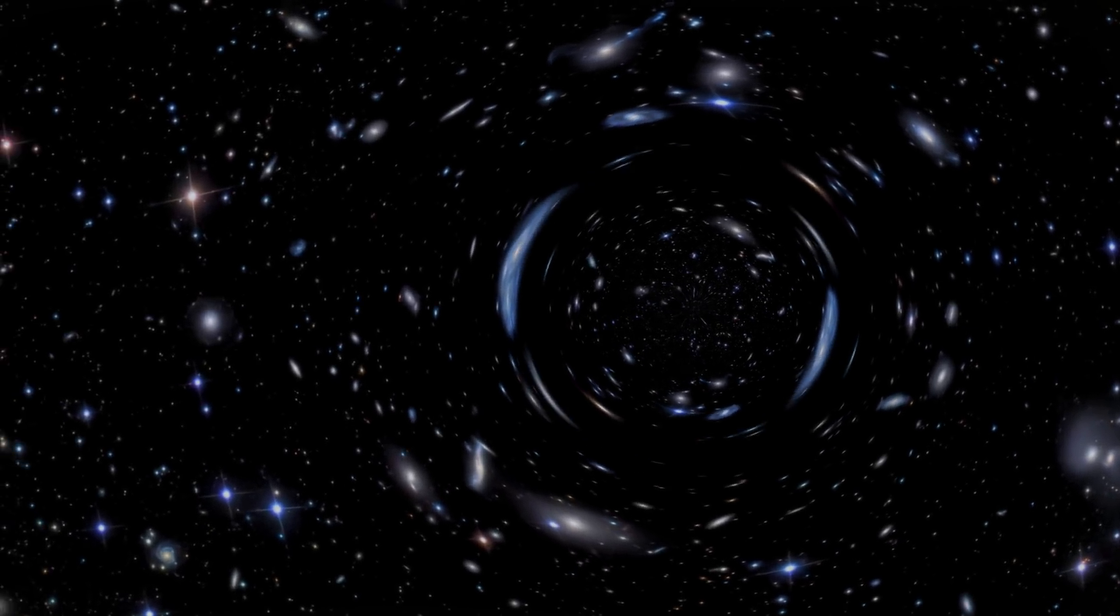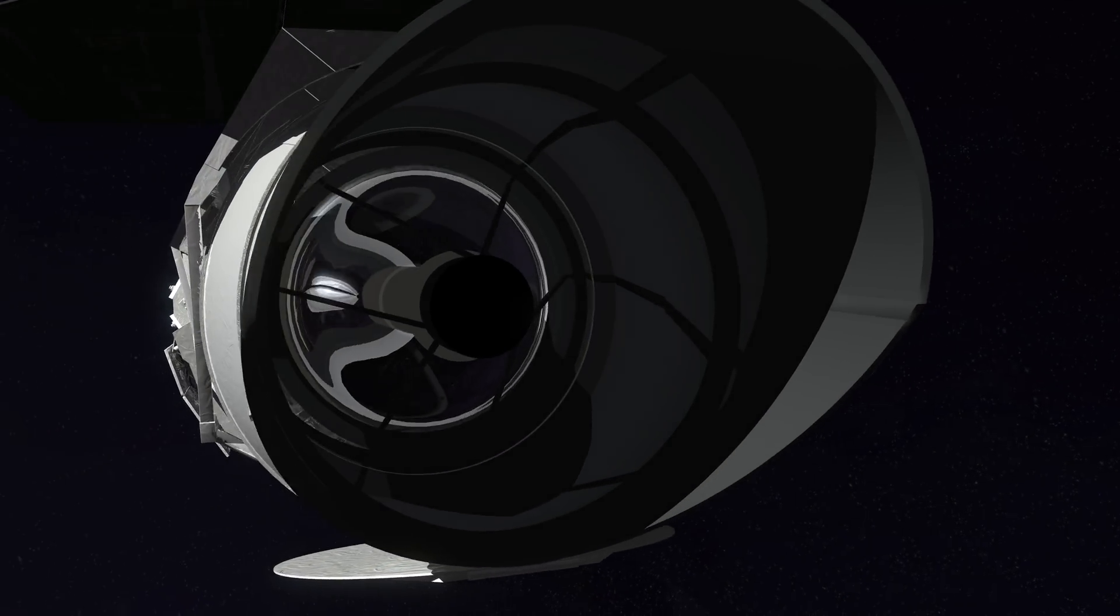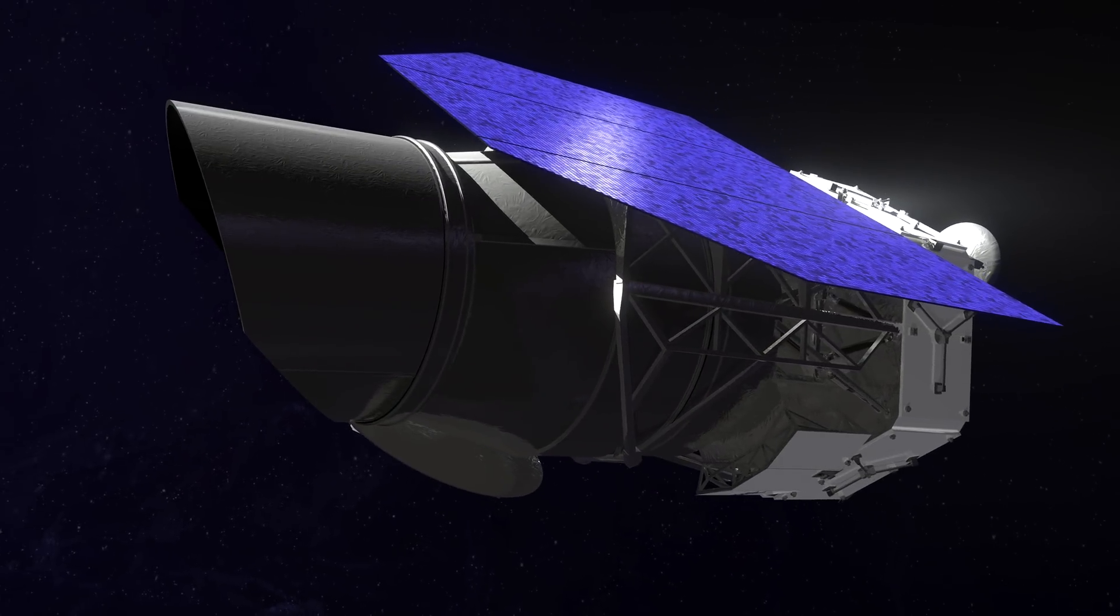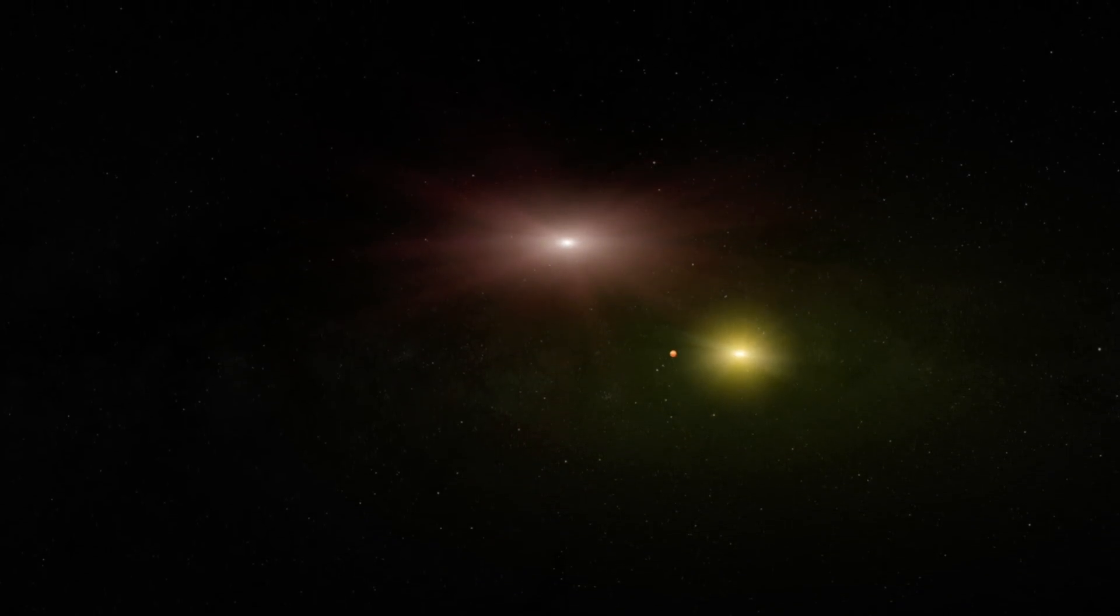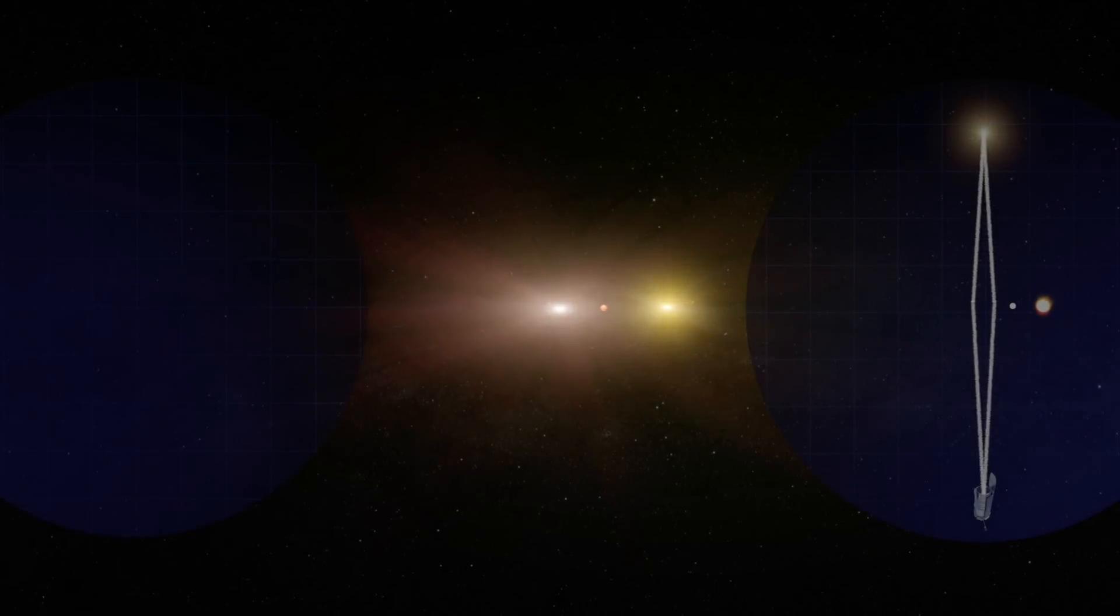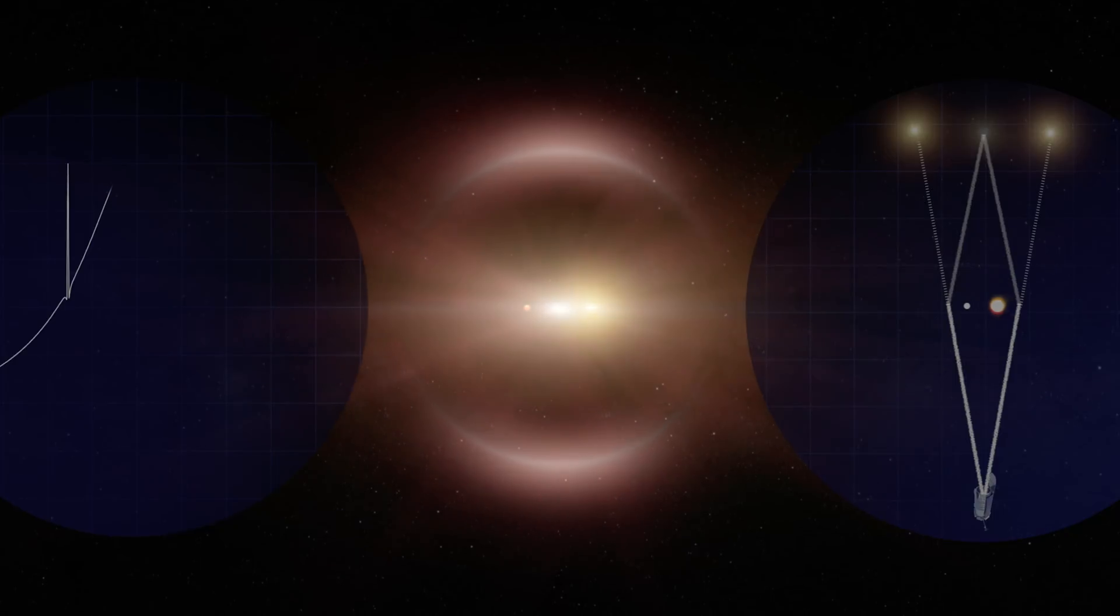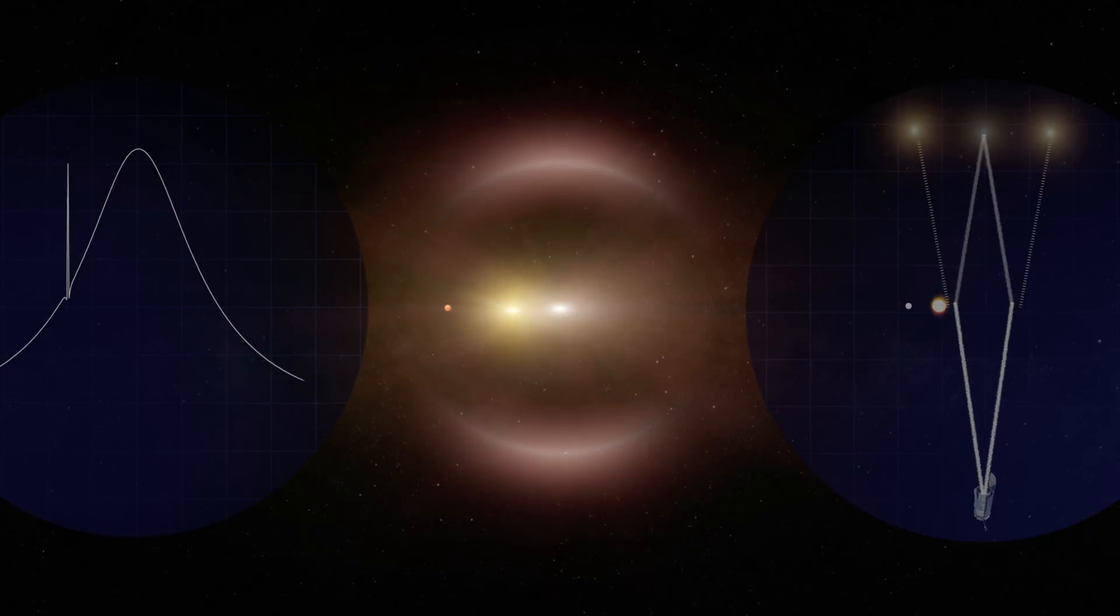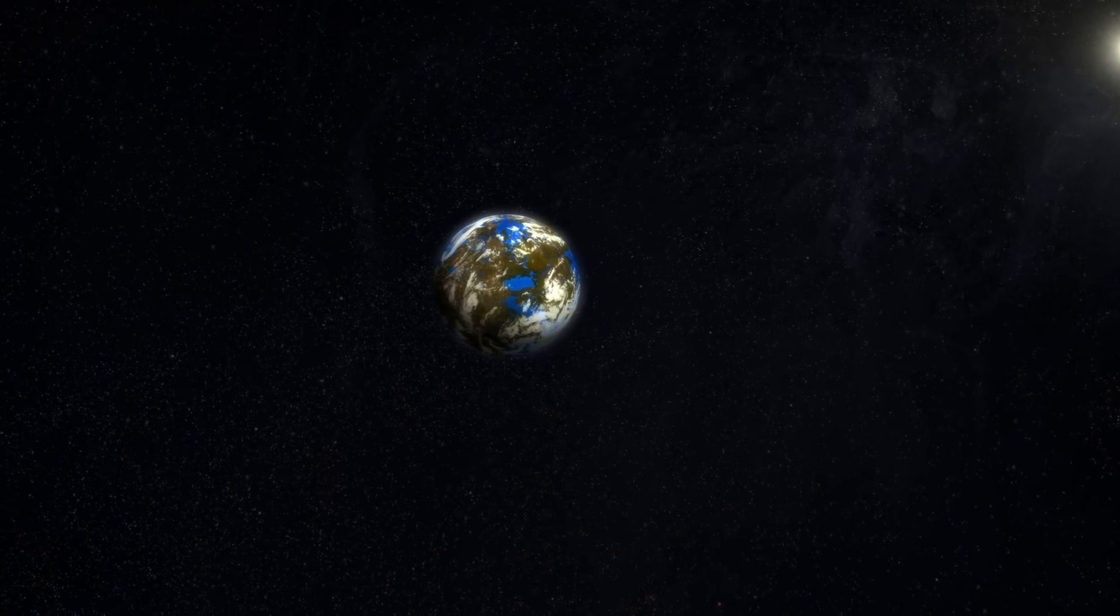A process called gravitational lensing. WFIRST's powerful 2.4 meter telescope will also help us in the search for extrasolar planets, or exoplanets. Using the same gravitational lensing principles, WFIRST will watch for so-called gravitational micro-lensing events, a unique light signature caused when a planet and its host star pass in front of a background star.